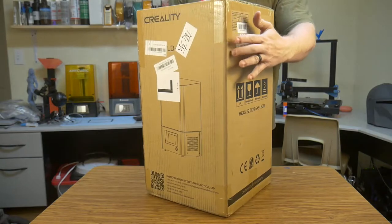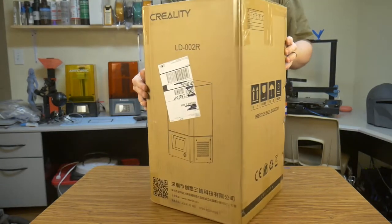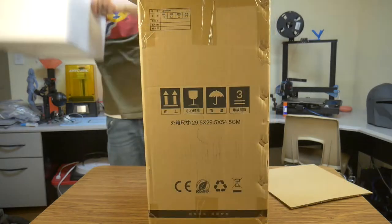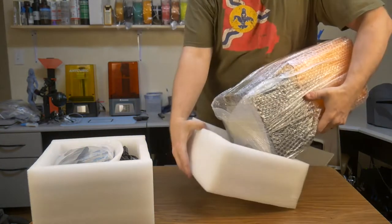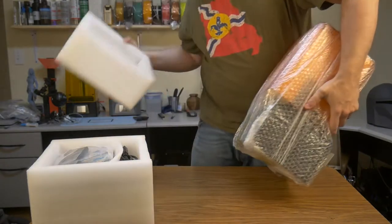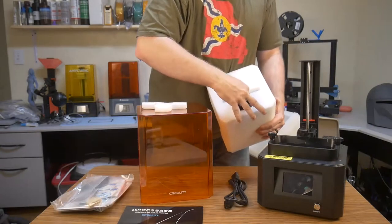Since this is a resin printer, it arrives mostly assembled, packed neatly in a sturdy box. Most of the accessories are packed in foam on top of the printer, but the vat and build plate are located inside the printer, also tightly packed in foam.